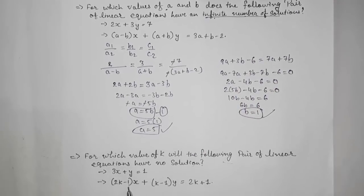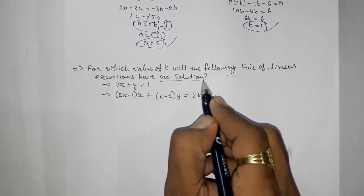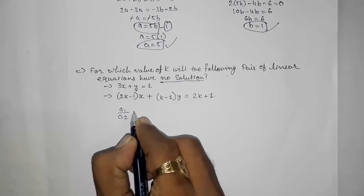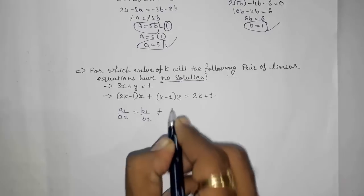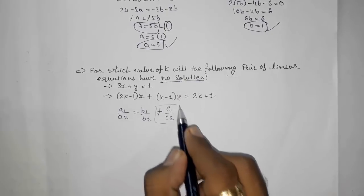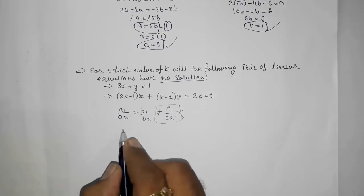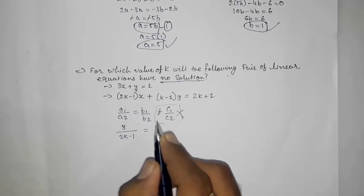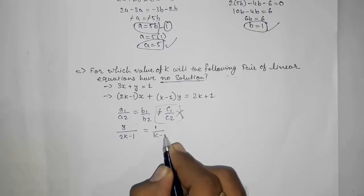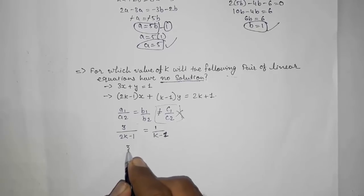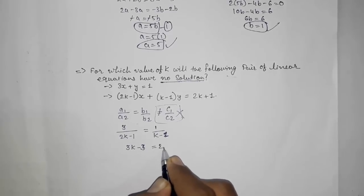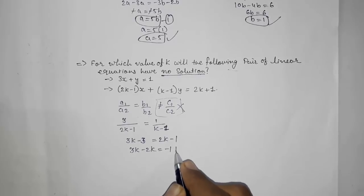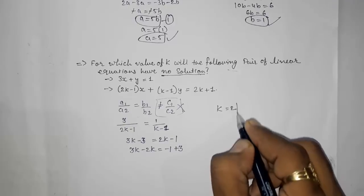This way we can find two unknown values only when there are infinitely many solutions; otherwise we can only find one. Now, if the pair of linear equations has no solution, then a1/a2 = b1/b2 but not equal to c1/c2. So we only use these two equal ratios. Here a1 = 2k - 1, a2 = 1... after cross multiplication: 3k - 3 = 2k - 1, so 3k - 2k = -1 + 3, giving k = 2.